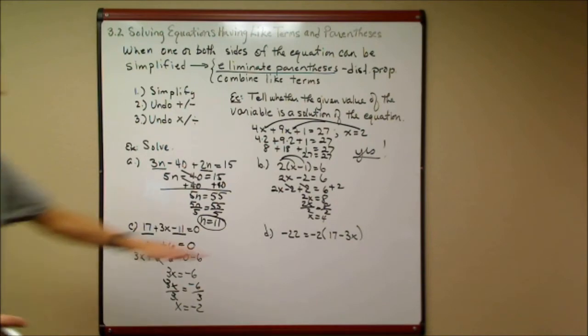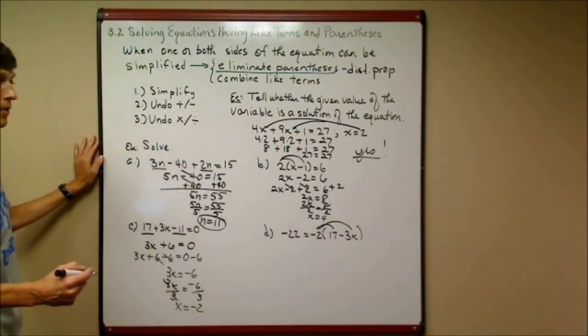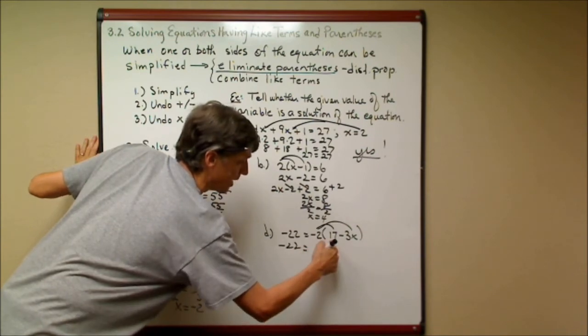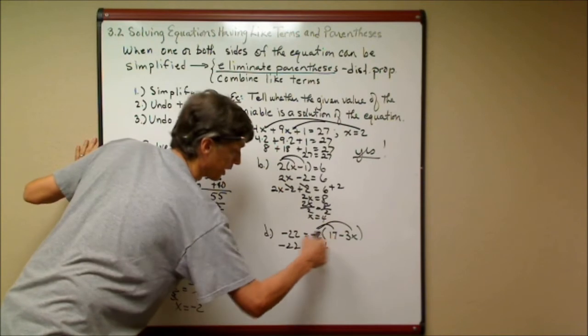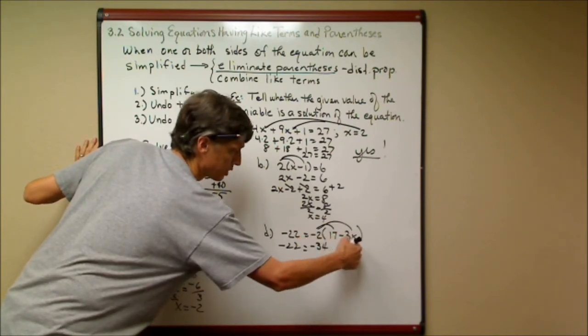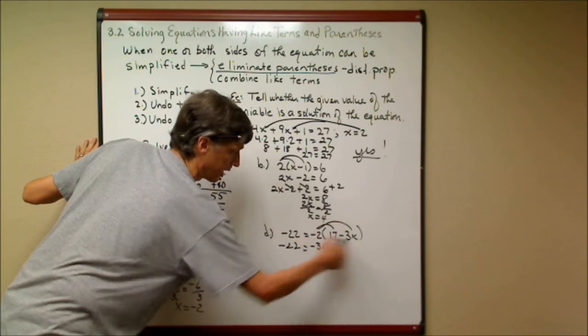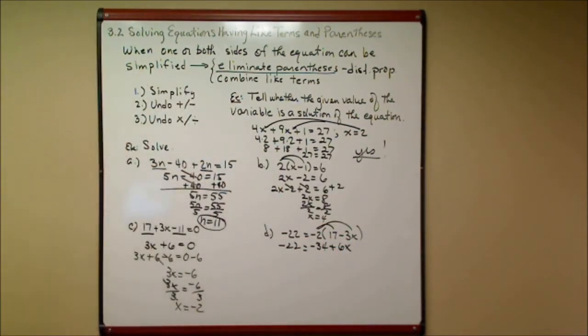One more over here. This time, the variable is on the right side. We've got parentheses, so I'm going to have to distribute. I get negative 22 is equal to, now negative 2 times a positive 17 is a negative 34. And here's where it gets tricky. Careful. Negative 2 times a minus 3x. Negative times negative. That minus 3x is like a negative 3x. Negative times negative is positive or plus 6x. Now it doesn't look near so bad.